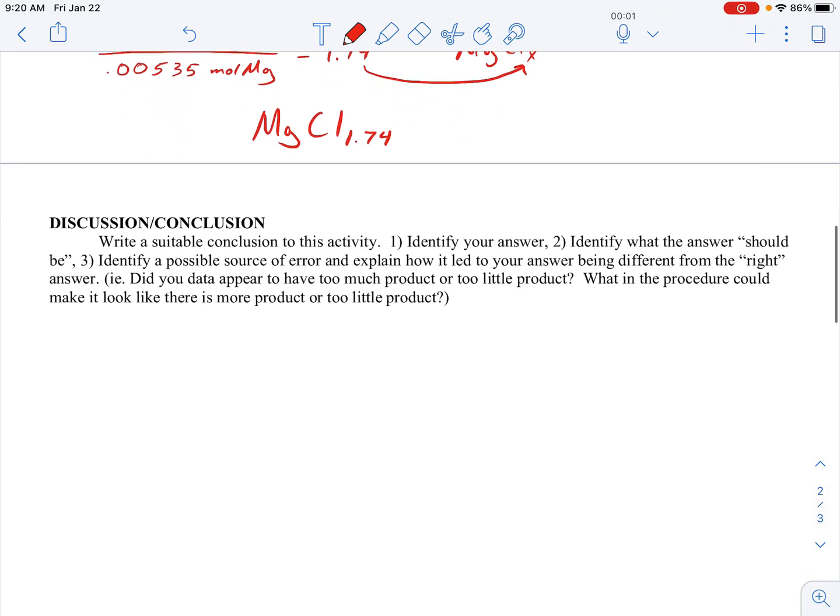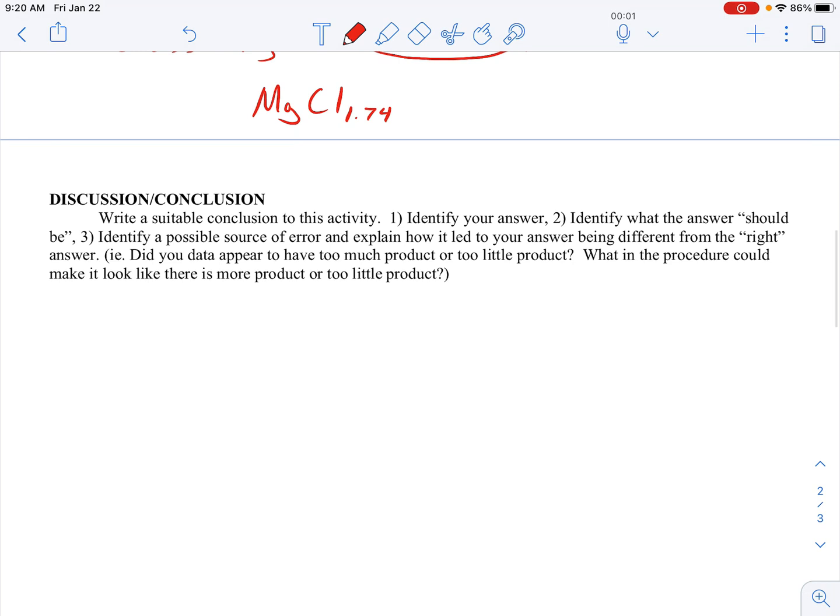Then we go to the back side, and the back side is the conclusion. So we're going to identify our answer. You're going to write this out in complete sentences. I determined in this lab that the empirical formula for magnesium chloride was MgCl₁.₇₄. Now, yours is going to be probably a little bit different than that.